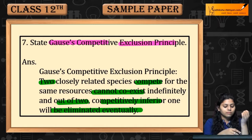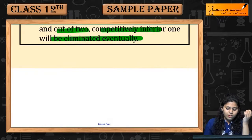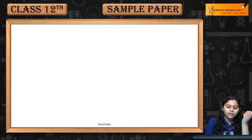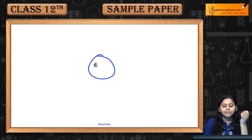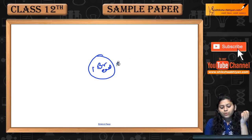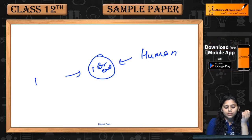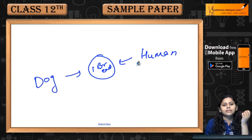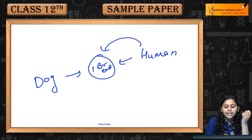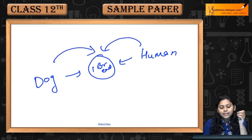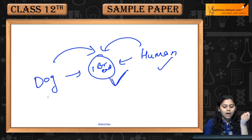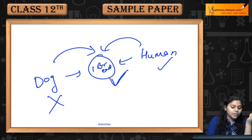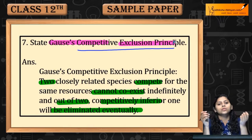मान लो आपके पास एक dog है और आप हो — just an example. आपके पास एक bread का piece है, तो आप या तो खुद खा सकते हो, या फिर अपने dog को दे सकते हो, पर कितने दिन तक? Means, आप दोनों इसके लिए compete कर रहे हो. जो इसे खा लेगा, जिसे ये resource मिल जाएगा, वो survive करेगा, other one will die. So, ये है Gauss का Competitive Exclusion Principle.